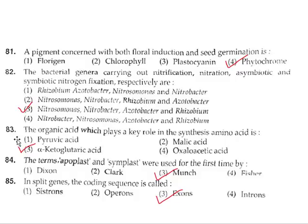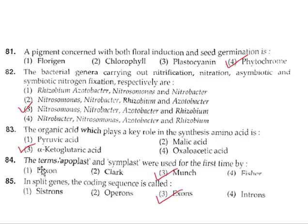Question 83: The organic acid which plays a key role in synthesis of amino acids is alpha-ketoglutaric acid. So the correct answer is option 3. Question 84: The terms apoplast and symplast were used for the first time by Munch. So the correct answer is option 3.